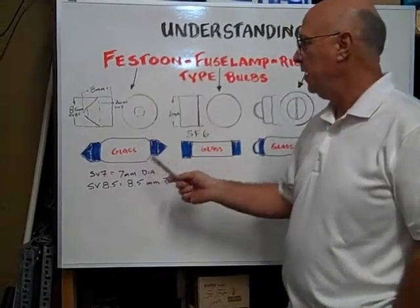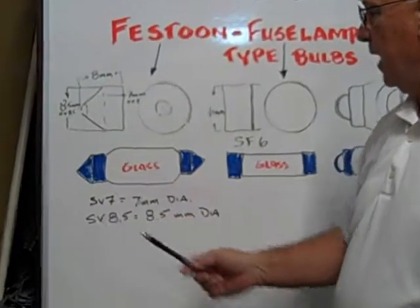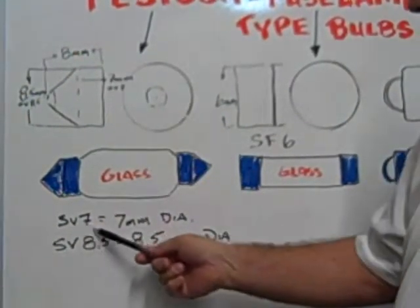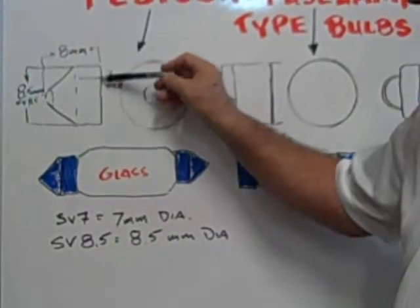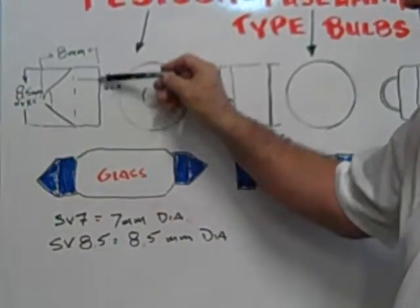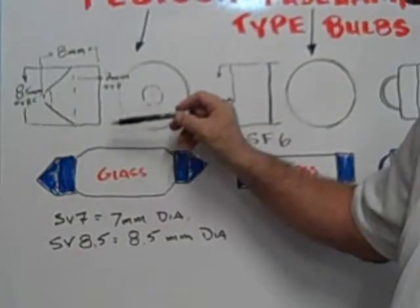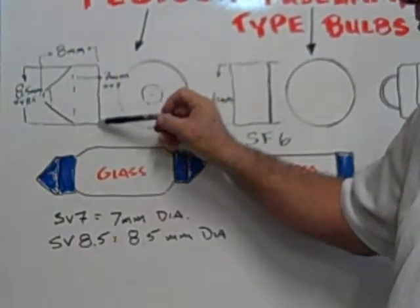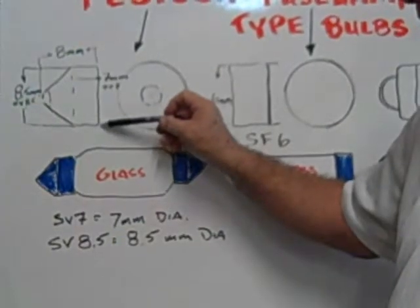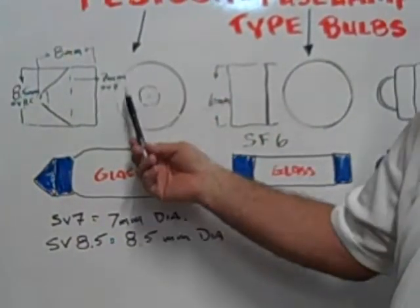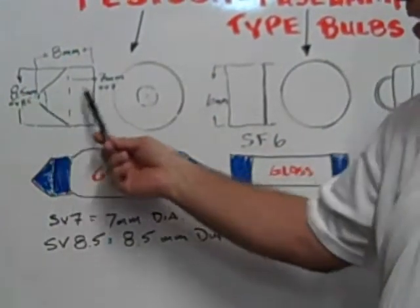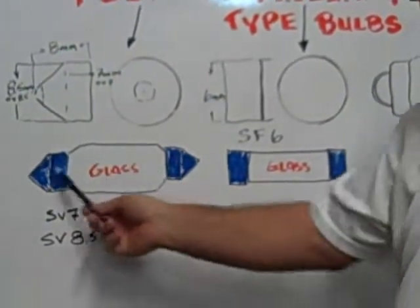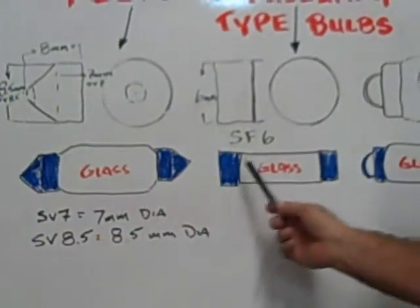The Festoon bulb has a pointed end and comes in two sizes diameter-wise. The SV7 is 7mm in diameter across the base. The SV8.5 is 8.5mm across the entire diameter. Both end caps are 8mm in length. There's a glass tube in the center of the two ends.